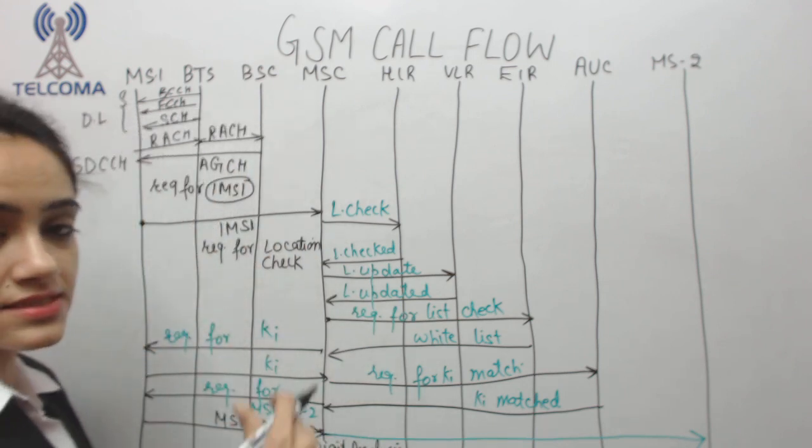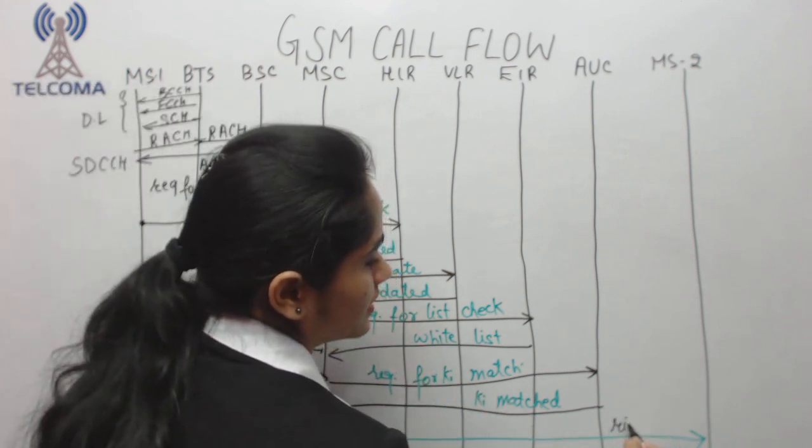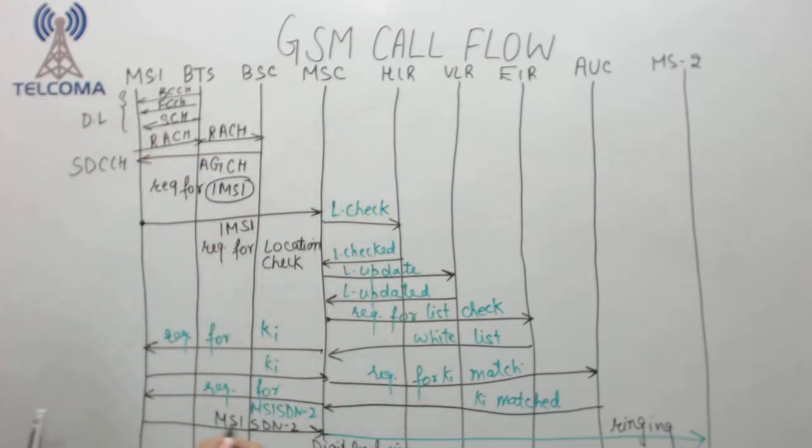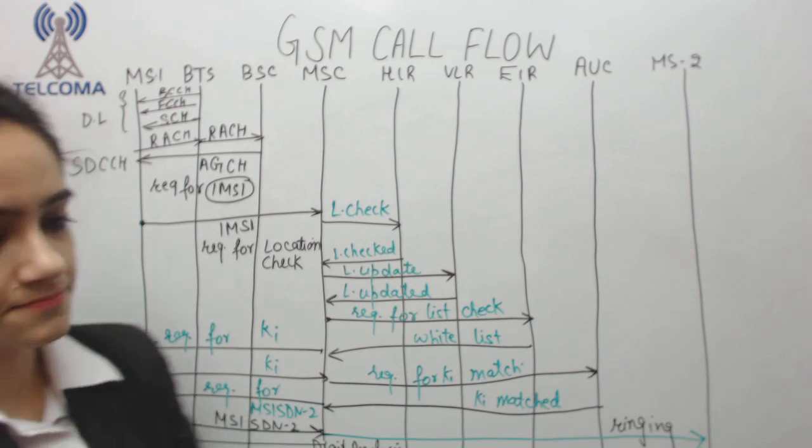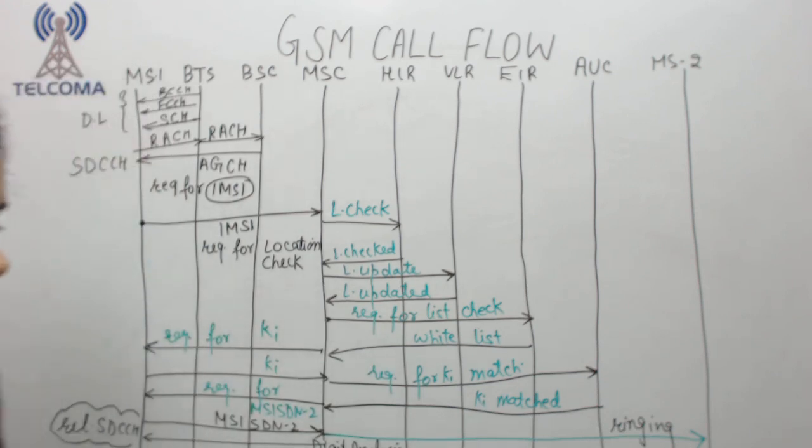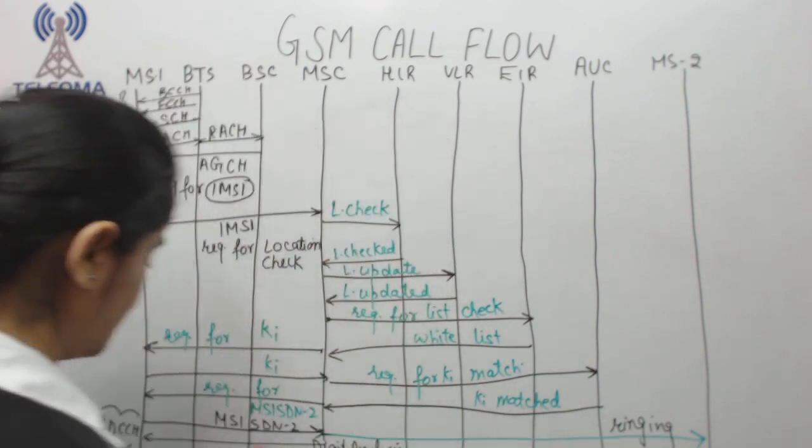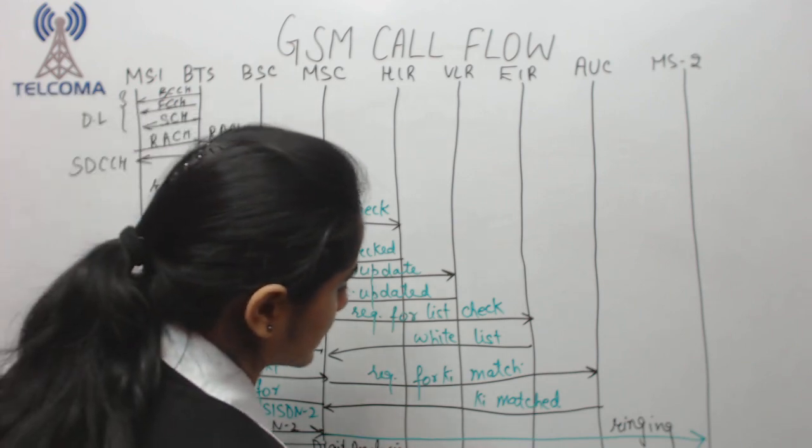When ringing, there is a command from MSC to release SDCCH because SDCCH is the channel for signaling purpose. Now suppose that person picks up the call. Now we have a traffic channel between two ends with which they can communicate.